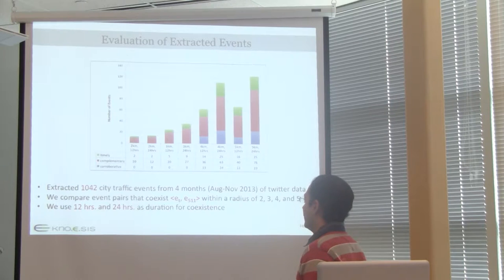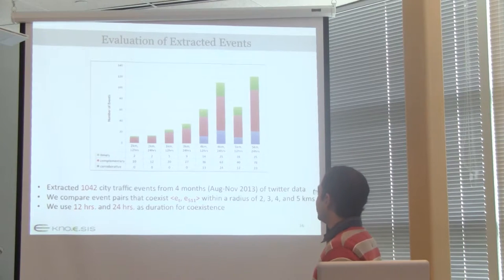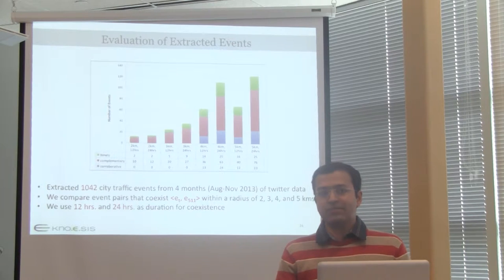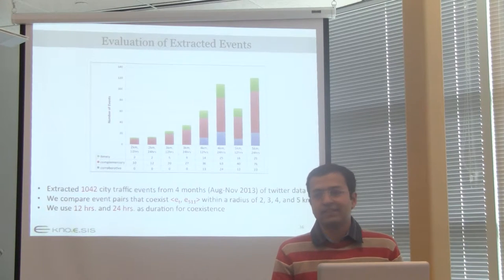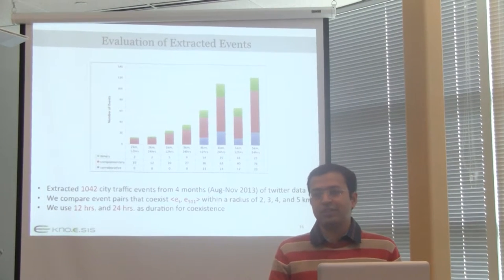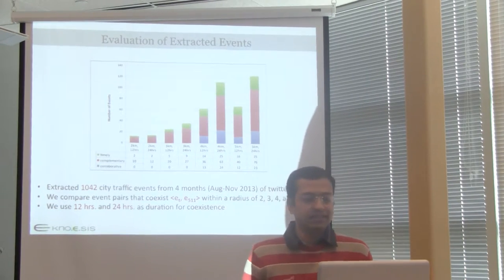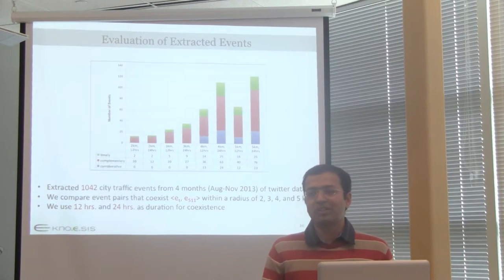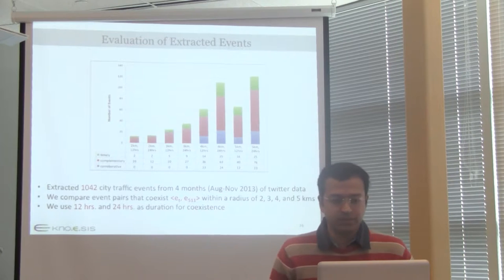We extracted 1,042 total events from the 8 million tweets, collected over four months. To compare Twitter events with 511 events, we looked at temporal coexistence — plus or minus 12 hours or 24 hours — and spatial proximity of two, three, four, or five kilometers. Here is an example of a complementary event: the green dot is reported from 511 as a construction event, and the red is what we extracted showing traffic talk at that location. That's complementary. For corroboration, we have accident extracted from both Twitter and 511, and fog extracted from both sources.